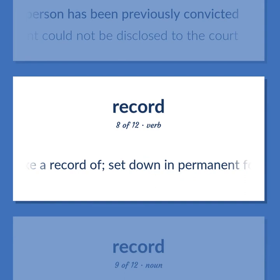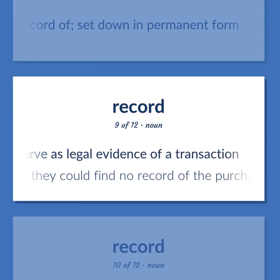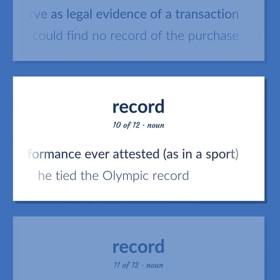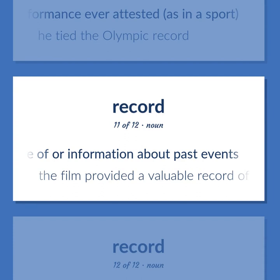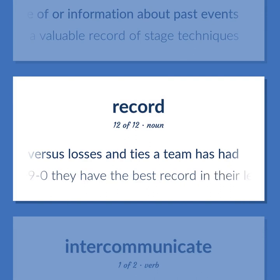Make a record of; set down in permanent form. A document that can serve as legal evidence of a transaction. They could find no record of the purchase. An extreme attainment — the best, or worst, performance ever attested, as in a sport. He tied the Olympic record. Anything, such as a document or a phonograph record or a photograph, providing permanent evidence of or information about past events. The film provided a valuable record of stage techniques. The number of wins versus losses and ties a team has had. At 9-0, they have the best record in their league.